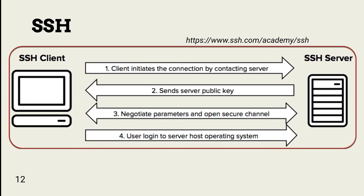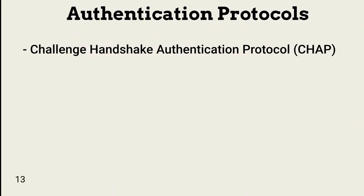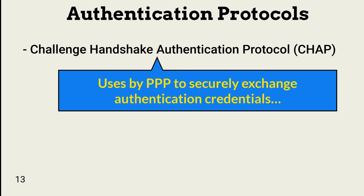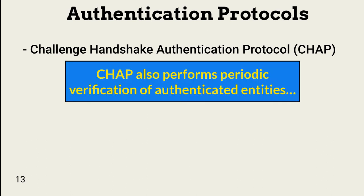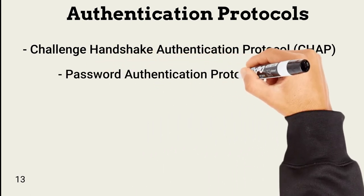Now let's move to some authentication protocols. The Challenge Handshake Authentication Protocol (CHAP) is one of the authentication protocols used by the Point-to-Point Protocol (PPP) to protect the remote authentication process. It encrypts usernames and passwords using a challenge-response handshake. Instead of only relying on point-in-time authentication, CHAP establishes a communication session that periodically verifies the identity of the user.